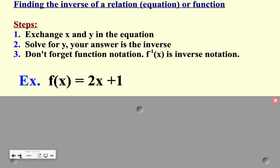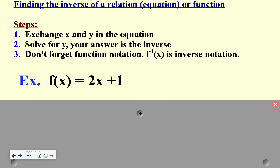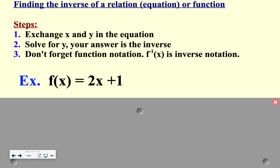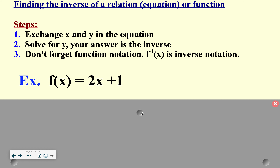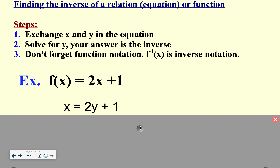So you flip x and y. Now if it's in an equation and not a set of points, these are the steps in finding the inverse. Step one: you exchange x and y — you literally switch them. Looking at this example of y equals 2x plus 1, I'm going to switch x and y. Remind yourself f of x is really just y, so your y is now here and your x is now here.